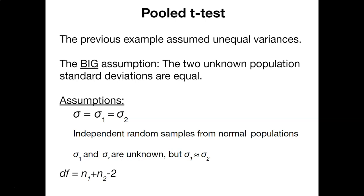We might take independent random samples from some normal population and we might not know what sigma 1 and sigma 2 are. That is, they're unknown. But we might think that they're about equal to one another. That is sigma 1 is approximately equal to sigma 2.